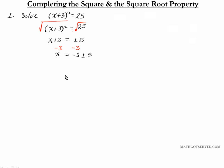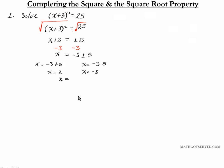The last step to isolate x is to subtract 3 from both sides, giving x equals negative 3 plus or minus 5. Those are the two solutions to this quadratic equation. Separating them: on the positive side, negative 3 plus 5 is 2, and on the negative side, negative 3 minus 5 is negative 8. So the solutions to this quadratic equation are 2 and negative 8.